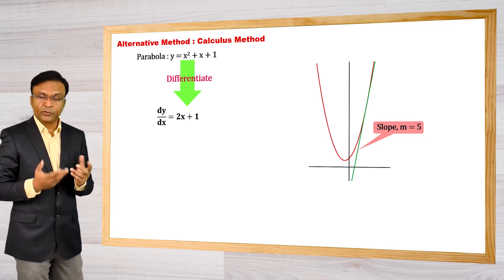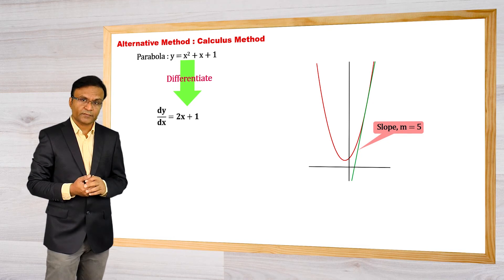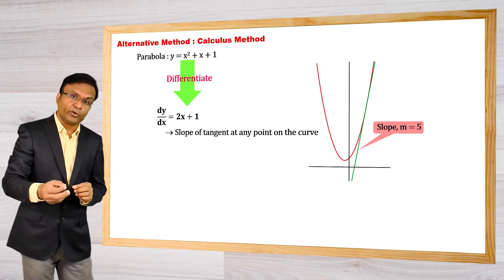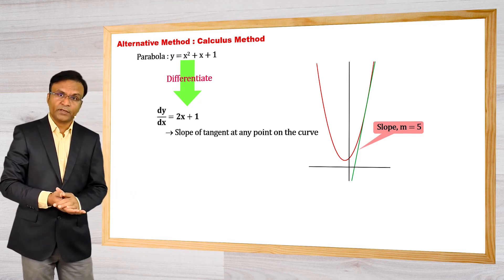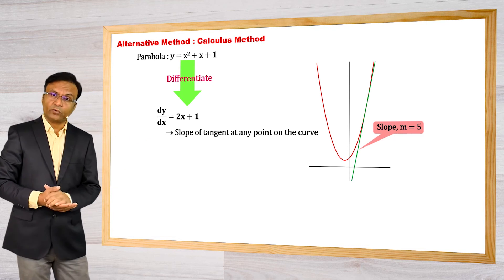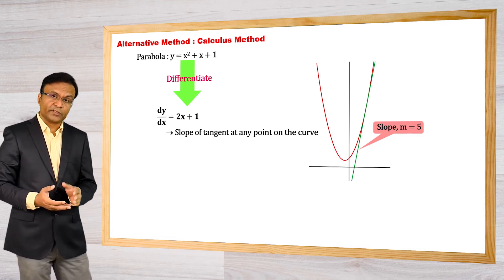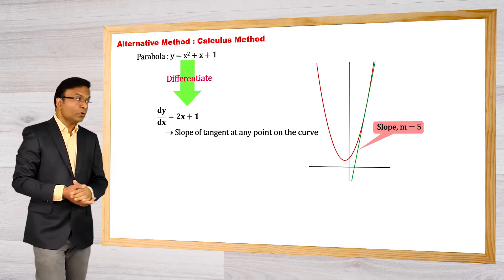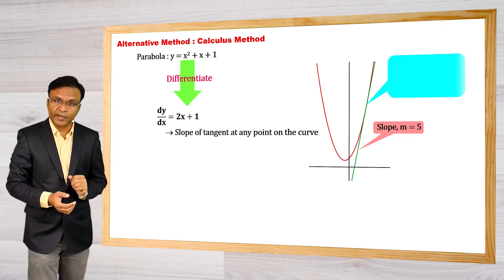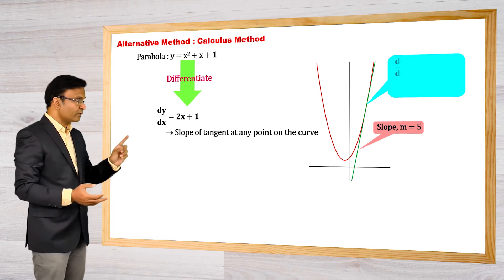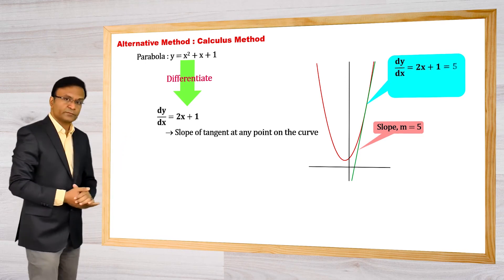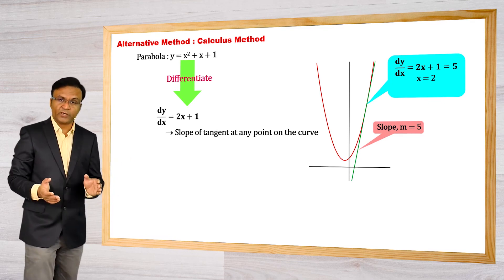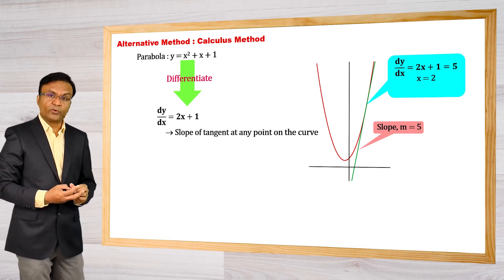What does this 2x plus 1 value represent? This is the slope of tangent to the curve at any point on it. At different points we have different values on the curve, giving us different slopes of tangent. For point P the slope is 5. That means the value of 2x plus 1 is 5, so the value of x is 2. We have now found the abscissa of point P.